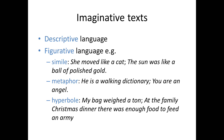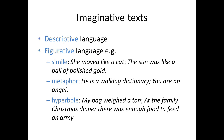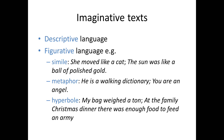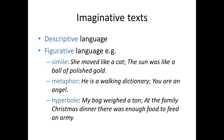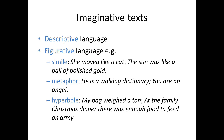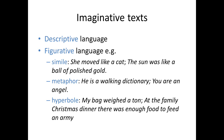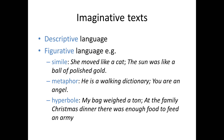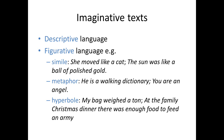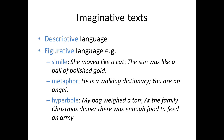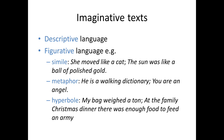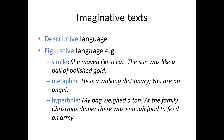There are different types of comparisons. For example, simile makes the comparison explicit, as in 'she moved like a cat' or 'the sun was like a ball of polished gold'. In the simile, the comparison is made explicit by using words like 'like'. It doesn't actually say that she was a cat or that the sun was a ball of gold, but that they resembled them in some way.